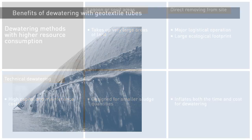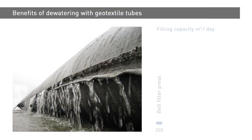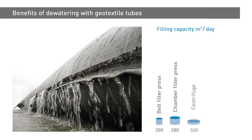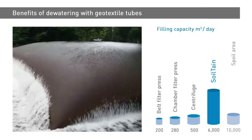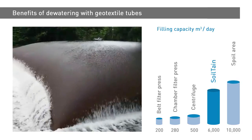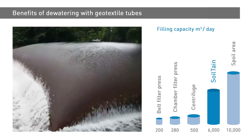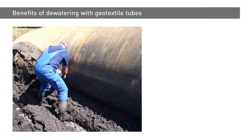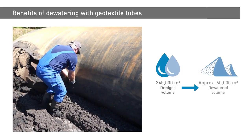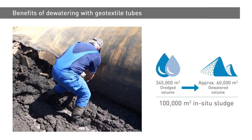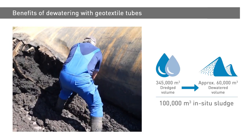In many situations, the use of geotextile tubes for dewatering offers immense benefits. Compared to the previously mentioned methods, they can achieve shorter dewatering times for larger volumes. Large quantities of sludge can be pumped into these tubes within a relatively short space of time. The permeable fabric then allows the water to escape. The required water content is achieved after a certain waiting period, which depends on the type of sludge, and the dewatered sludge can then be removed from the tube and transported off-site.